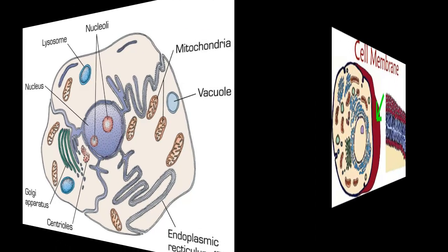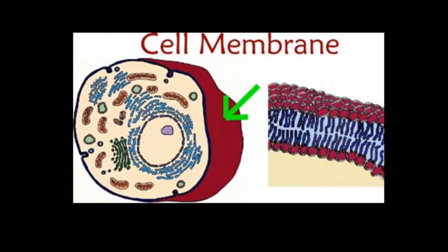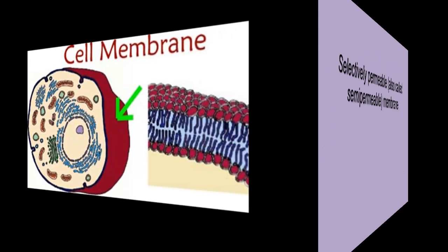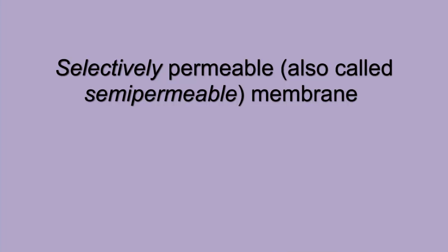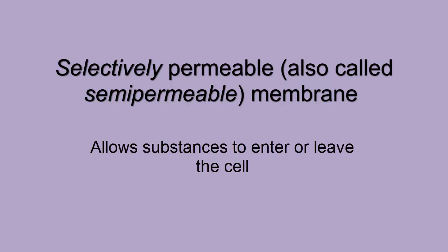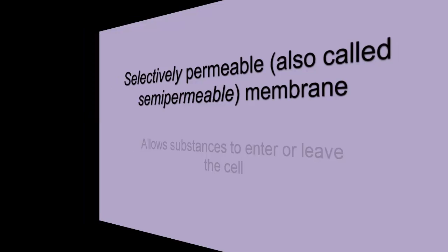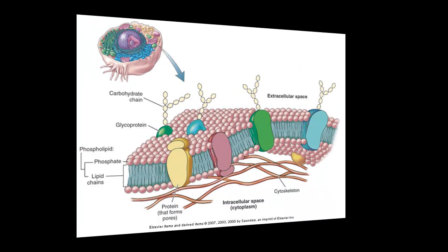We're going to talk about the structures of the cell, starting from the outside and working our way in. The cell membrane houses the cell — it's kind of the wrapper of the cell. We also call it the plasma membrane. Basically, it separates the inside of the cell from the outside. The cell membrane is described as selectively permeable, meaning some stuff gets in and other stuff does not. Sometimes we use the term semi-permeable.